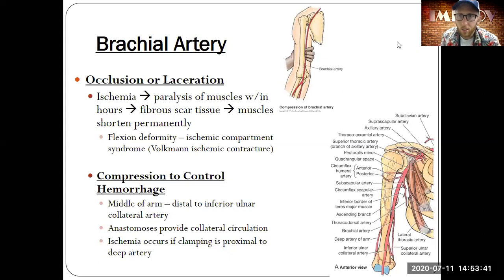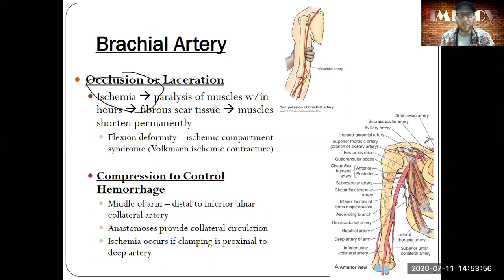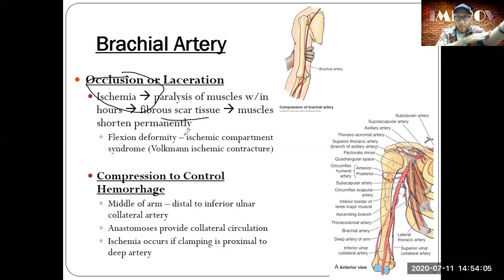Unfortunately, the brachial artery is really the only main path to get down to the elbow, wrist, and hand. So if you have ischemia in this artery, within hours you're talking about scar tissue and damage to muscles down the line. Anything you include up here is going to affect structures farther down.